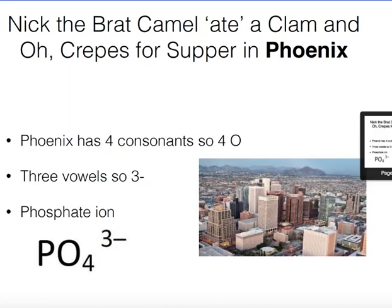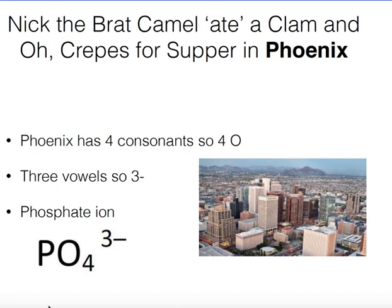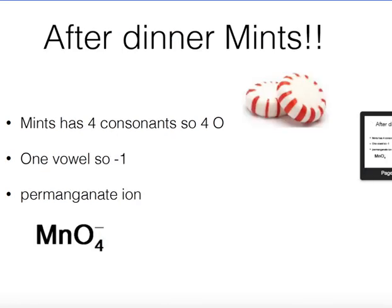Looking at 'Phoenix': it has four consonants, so four oxygens. It has three vowels — E, O, I — so a three minus charge. That gives you the phosphate ion: PO4^3-. In physiology, phosphate transfers from ATP to form ADP. Our bodies are naturally full of phosphates outside of ATP as well.